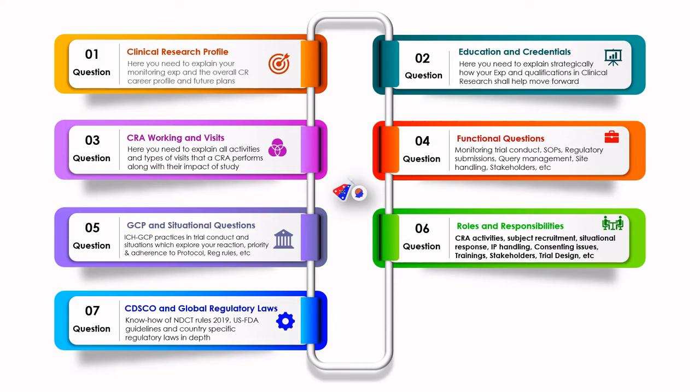What is Form 1572? What is the investigator undertaking and why is it required? They might tell you that an investigator has to sign an undertaking and ask what the 1572 form contains, what the role of a principal investigator is, and why he needs to give it in writing. This is the kind of understanding of regulatory laws and rules which govern the conduct of clinical trials in a particular country.